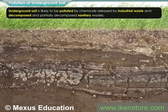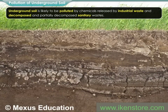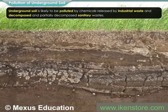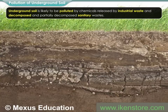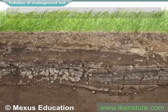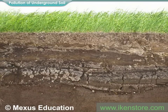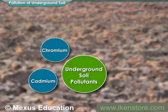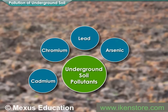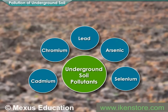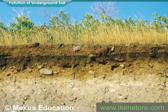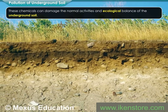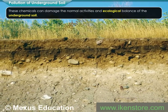On the ground, soil is likely to be polluted by chemicals released by industrial waste as well as decomposed and partially decomposed sanitary wastes. Many dangerous chemicals like cadmium, chromium, lead, arsenic, and selenium products are likely to be deposited in underground soil. These chemicals can damage the normal activities and ecological balance of the underground soil.